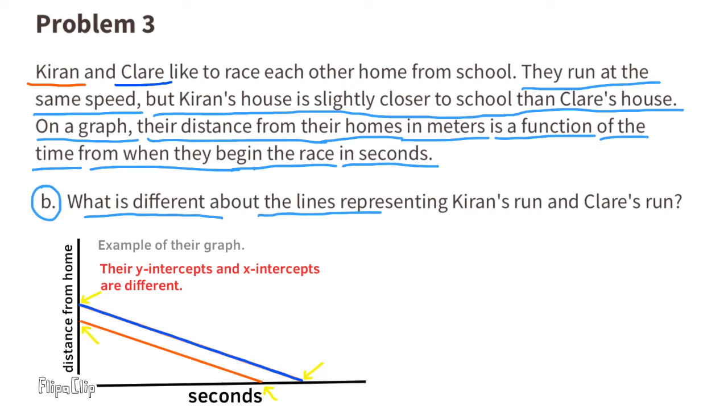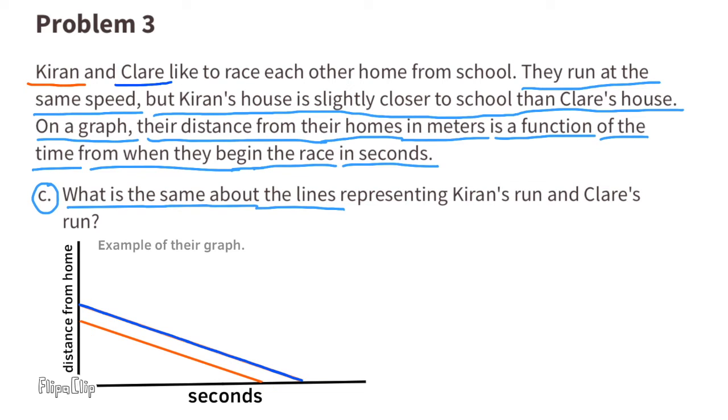What is the same about the lines representing Kieran's run and Claire's run? These lines have the same slope.